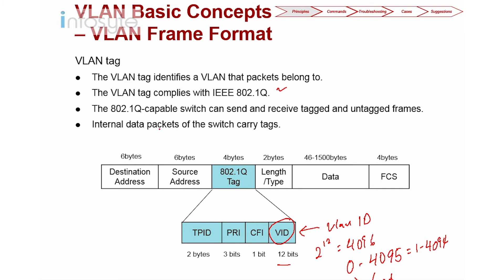An 802.1Q-capable switch can send and receive both tagged and untagged frames. Tagged frames most likely correspond to trunk ports, while untagged frames correspond to access ports. Internal data packets of the switch also carry tags.